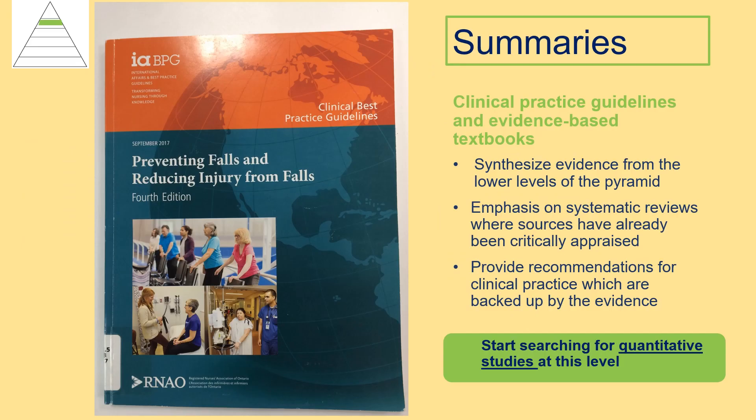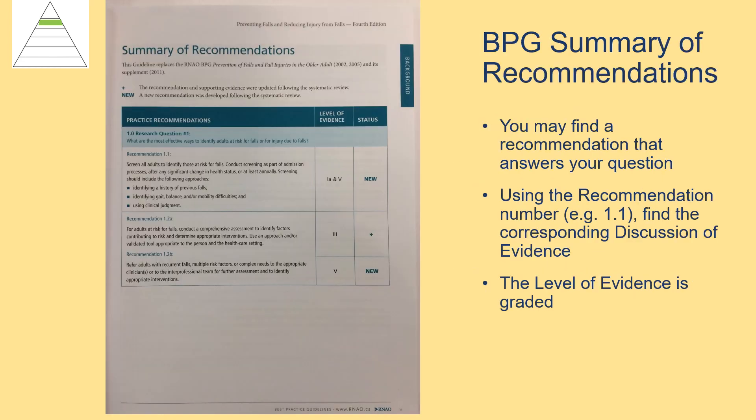Our next level is summaries. At this level of the pyramid, evidence was gathered and synthesized from all the lower levels of the 6S Pyramid, with an emphasis placed on systematic reviews where sources have already been critically appraised. Based on the available evidence, recommendations were made for clinical practice. Some examples of summaries are clinical practice guidelines and evidence-based textbooks. When you are searching for an answer to a quantitative question, you begin searching at the summaries level of the pyramid. You may be accustomed to seeing the RNAO best practice guidelines online, but they also come in print format and you will find most of the guidelines available in the Conestoga Library Collection.